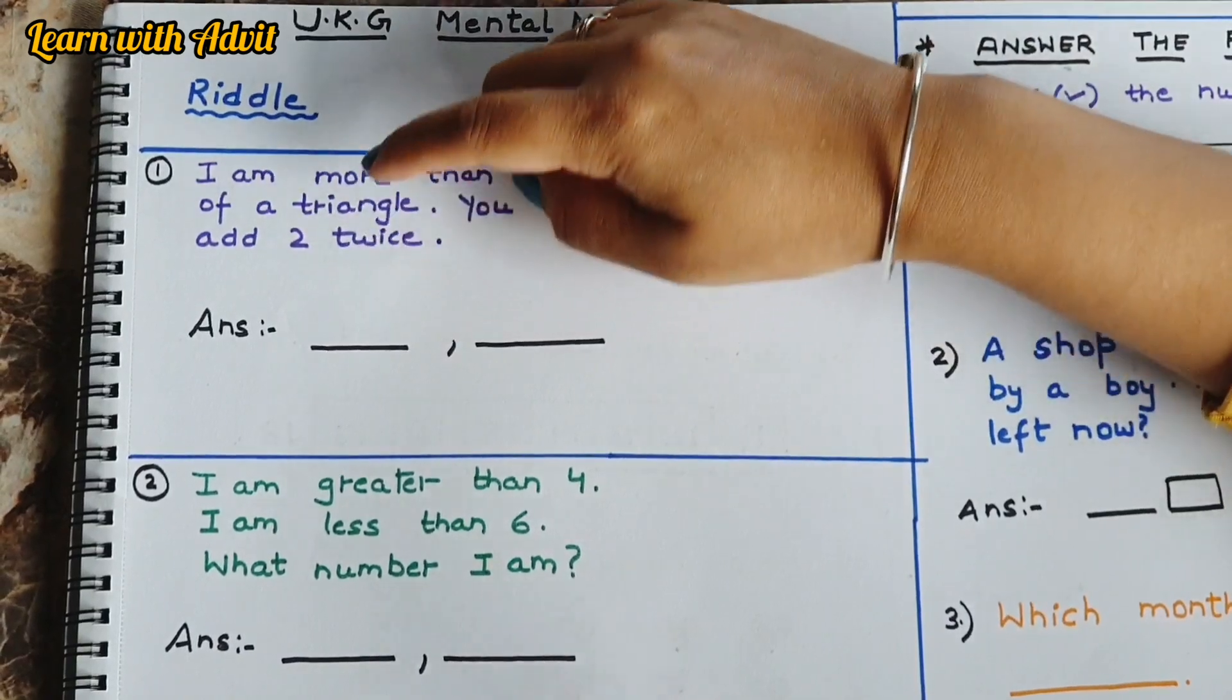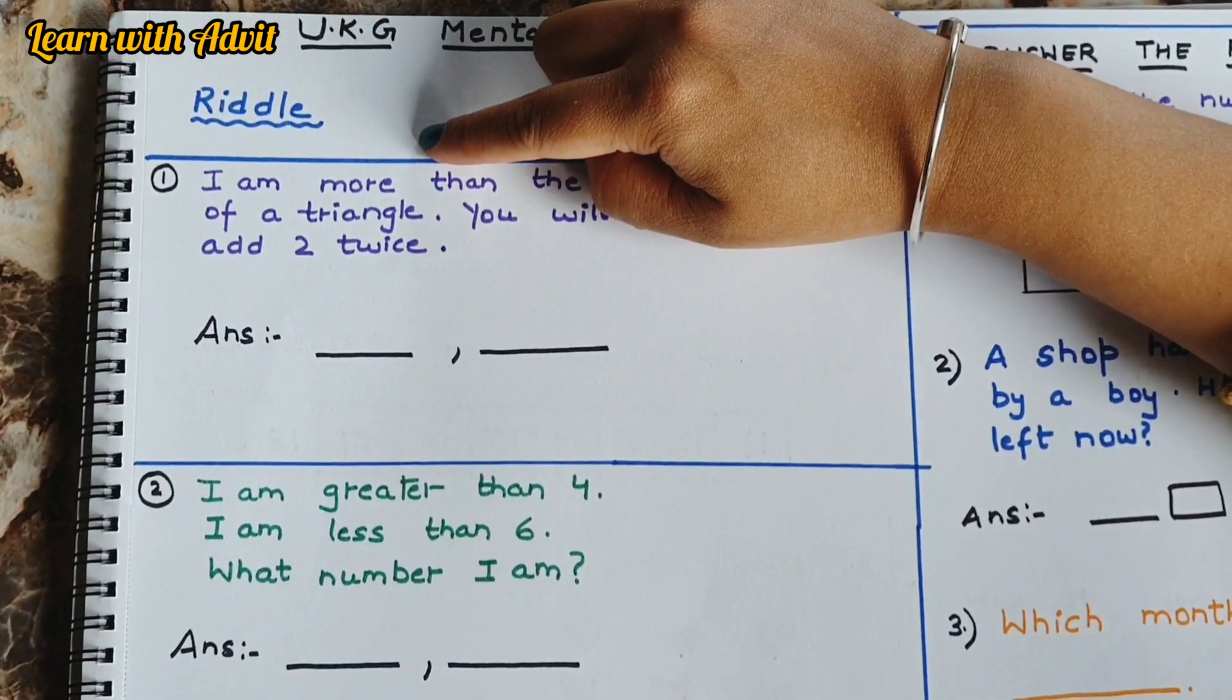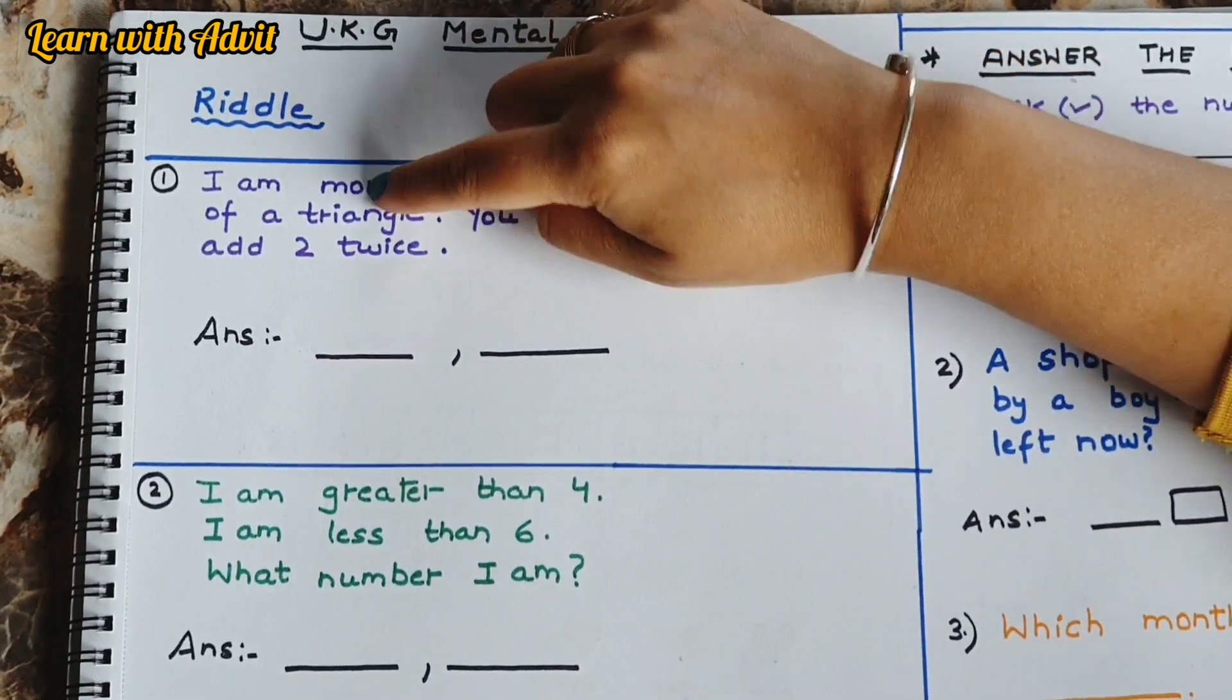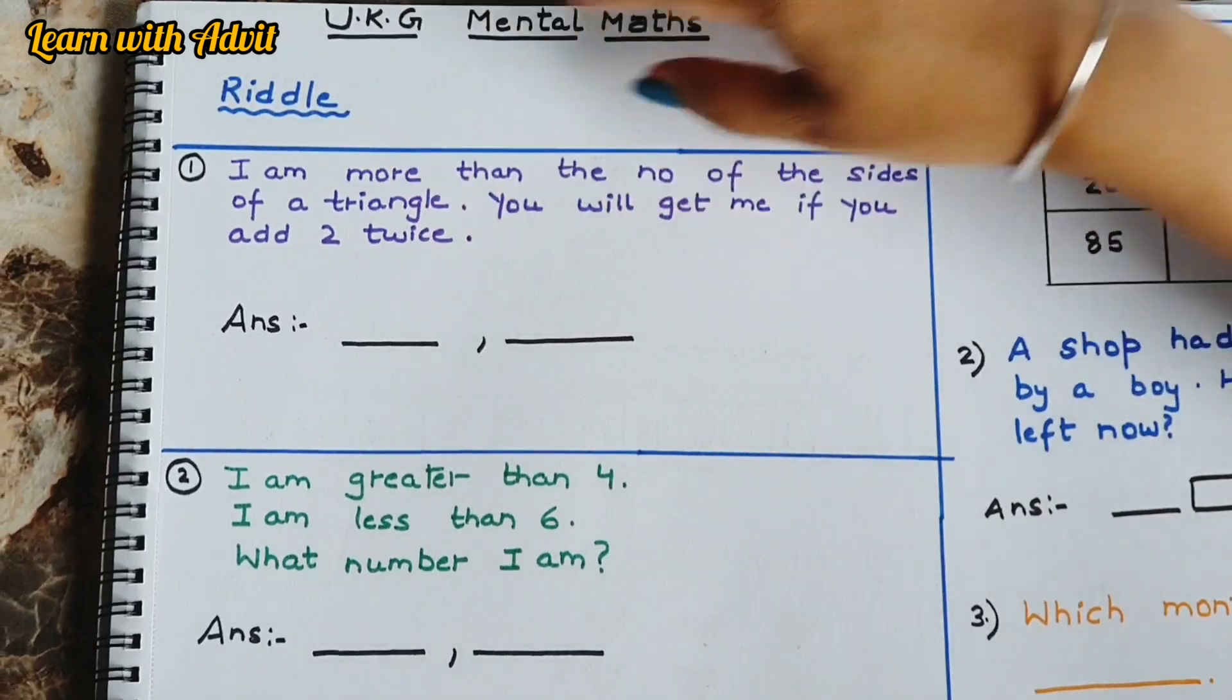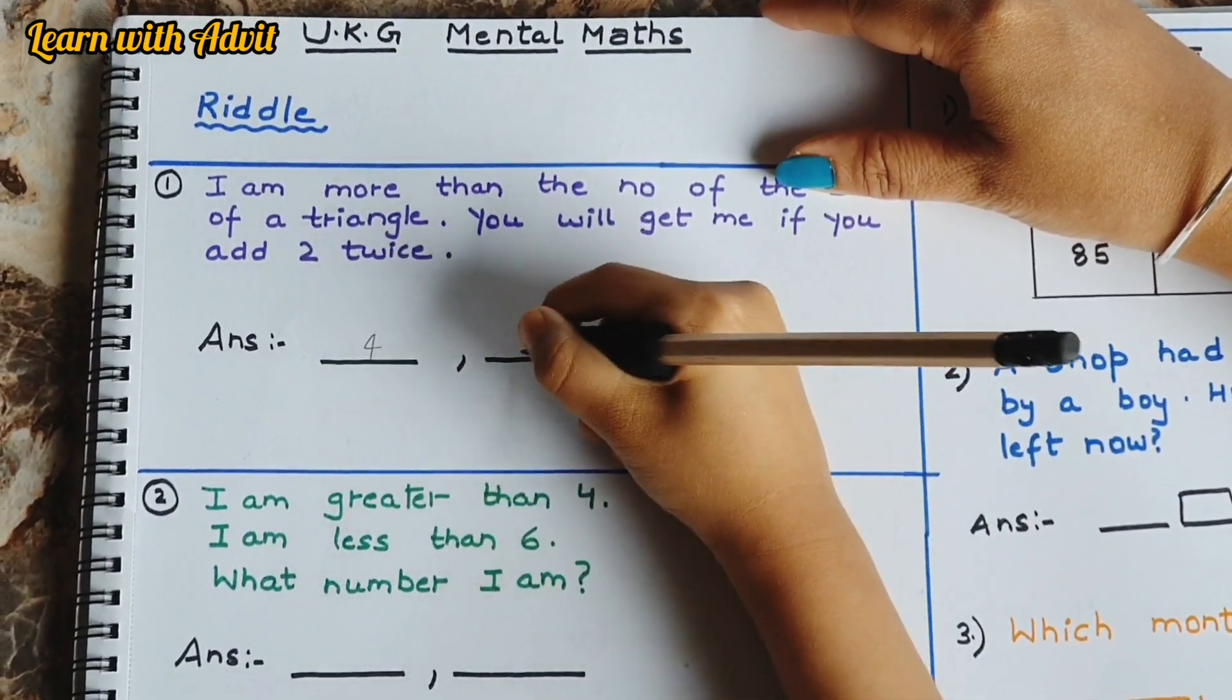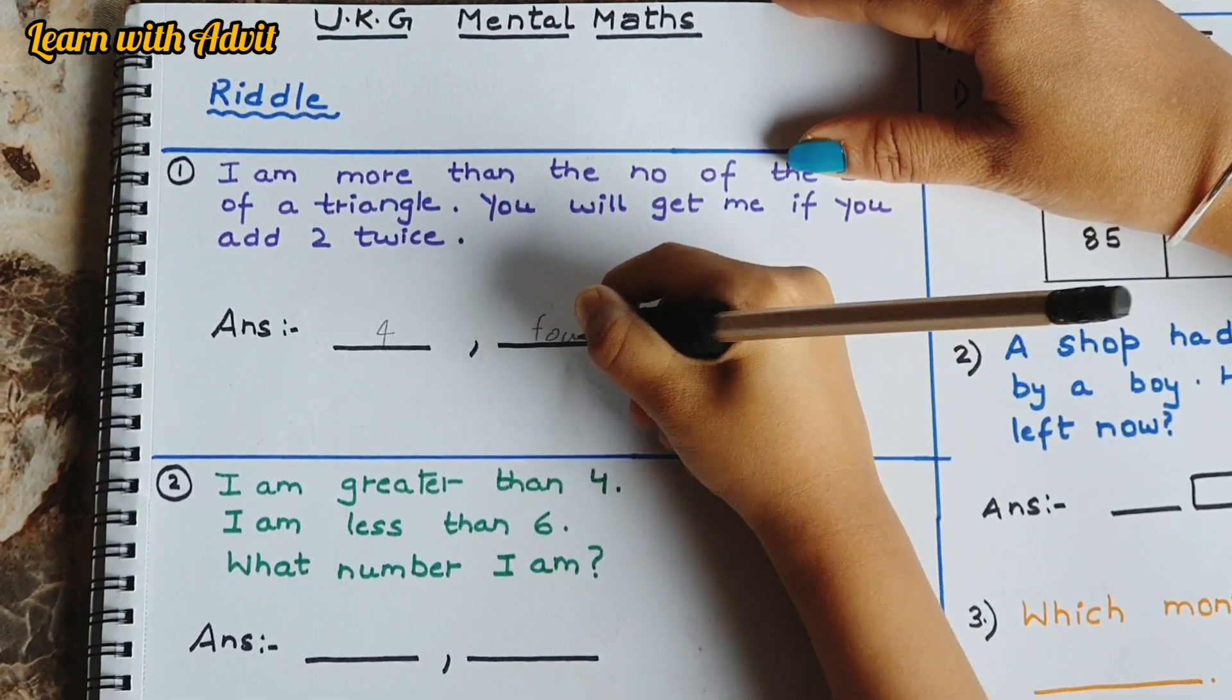You will get me if you add two twice. That means you have to add two plus two. What is the number? Two plus two equals four, and four is greater than three. Yes, write it. Very good. F-O-U-R.